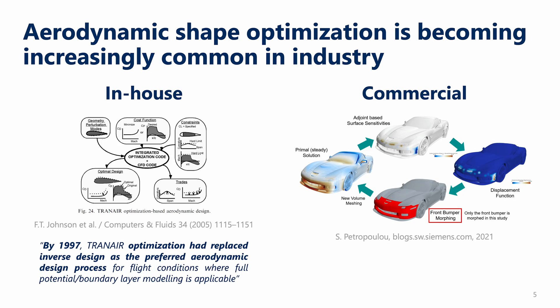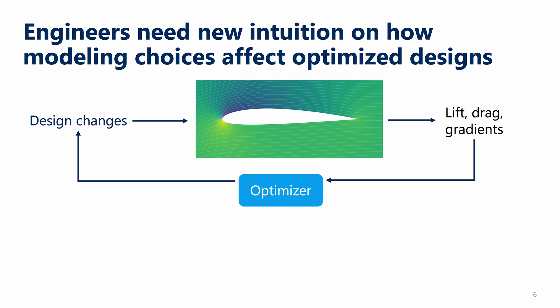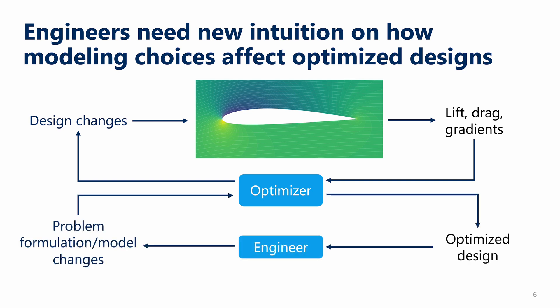Aerodynamic shape optimization was initially used by experts who had a thorough understanding of both the CFD and optimization codes. Recently, commercial CFD tools have been adding aerodynamic shape optimization capabilities, which allow new users, such as students and more junior engineers, to get their hands on these tools. As much as we'd like it to be, optimization isn't magic — it still needs human input. In practice, there's an outer loop around the optimization loop where the engineer looks at the optimized design and updates the optimization problem or the underlying model to try to improve the final result.